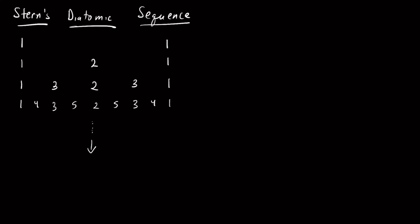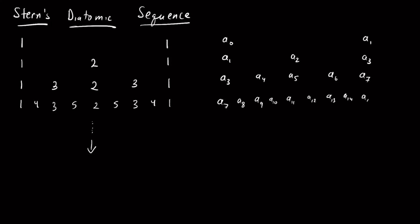The sequence we generate is called Stern's Diatomic Sequence. Let's label the elements: A0, A1, then continuing A1, A2, A3. Drop down to get A3, A4, A5, A6, A7. Then A7, A8, A9, A10, A11, A12, A13, A14, and A15. I would just keep going like this forever.